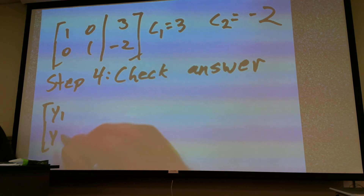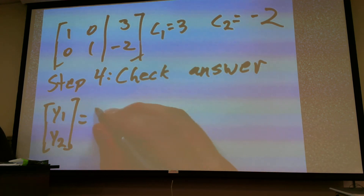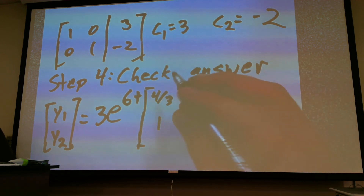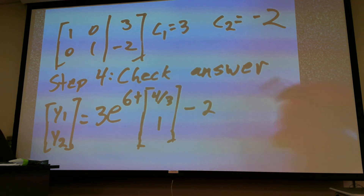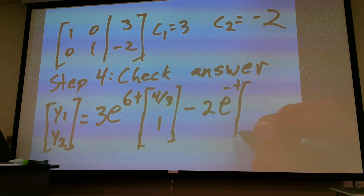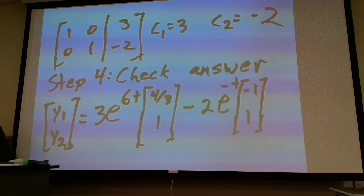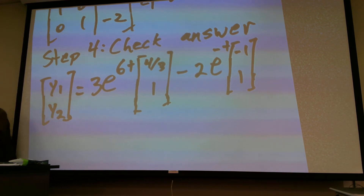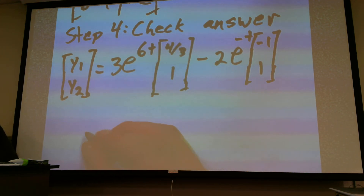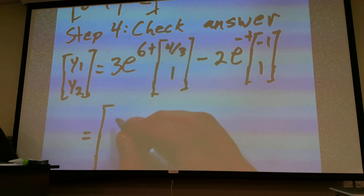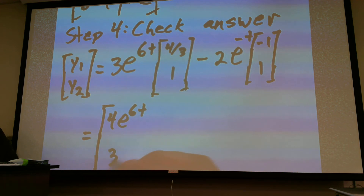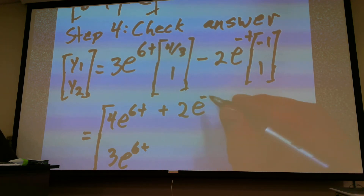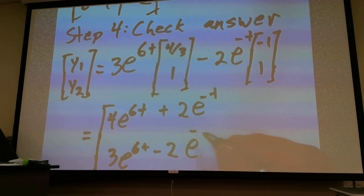Let's write down the answer. [Y1, Y2] = 3·e^(6t)·[4/3, 1] + (-2)·e^(-t)·[-1, 1]. Multiplying through, that gives us [Y1, Y2] = [4e^(6t) + 2e^(-t), 3e^(6t) - 2e^(-t)].